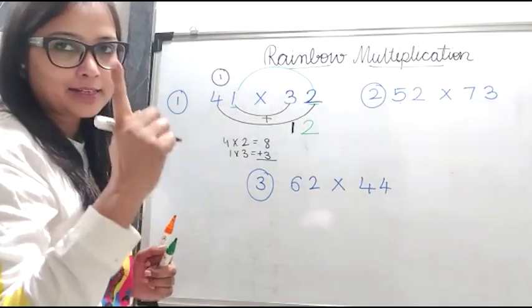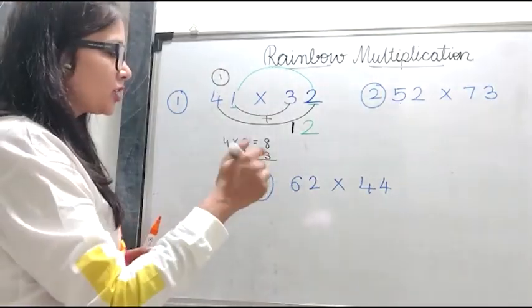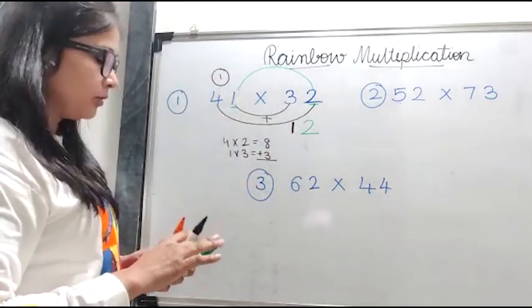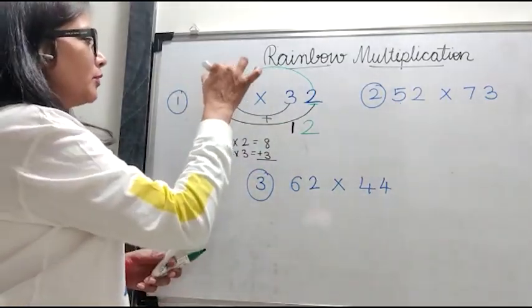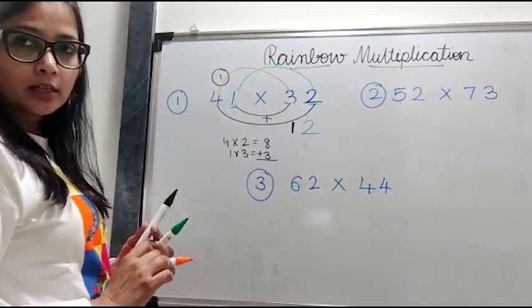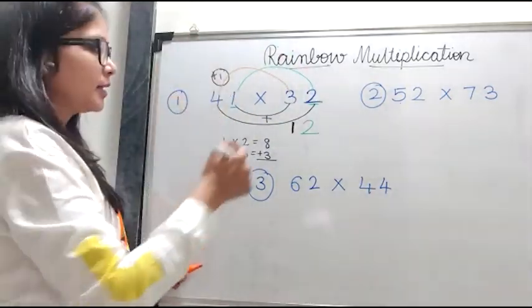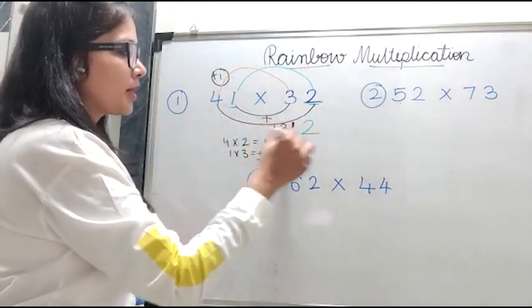So this one is carried as we have placed for only one digit. So this is 11. One units I write it down and one I carry. Now we'll go to the last step. We'll multiply four by three. So four by three is 12 plus one is 13. So this is my answer.